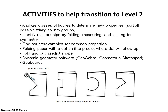Activities to help students transition from level 1 to level 2: they need to analyze classes of figures to determine new properties. Sort all possible triangles into groups — which have right angles, which are symmetric, which have an obtuse angle? Identify relationships of shapes by folding, measuring, and looking for symmetry. They can find counterexamples for common properties, such as: do all triangles have a right angle? Folding paper with a dot placed on it and predicting where the dot will appear when unfolded. They can also fold and cut, and predict the shape in the middle of the paper when it's opened.